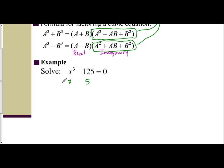And so our a is x and our b is 5. Since it's x cubed minus 125, I'm going to use a minus b times a squared plus ab plus b squared.